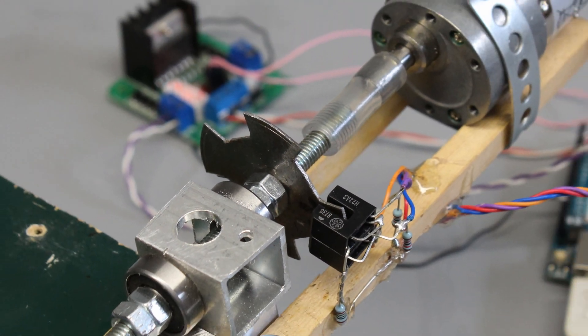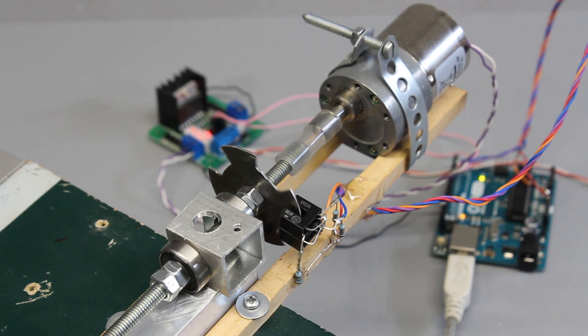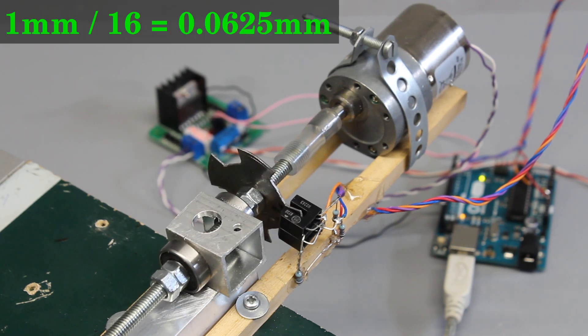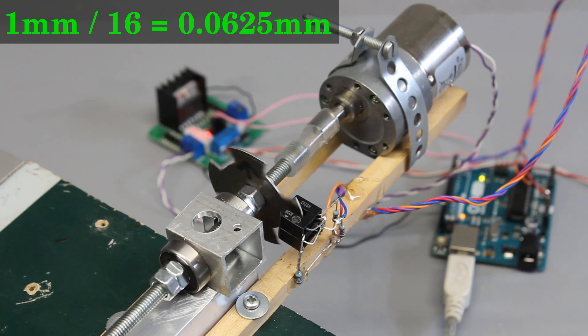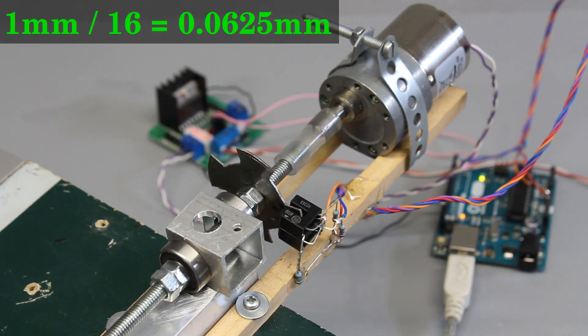With two transmissive sensors and a toothed sensor disc having 4 teeth, we get 16 steps per revolution. With each step, the carriage moves 0.06mm, a resolution that is sufficient for many applications.